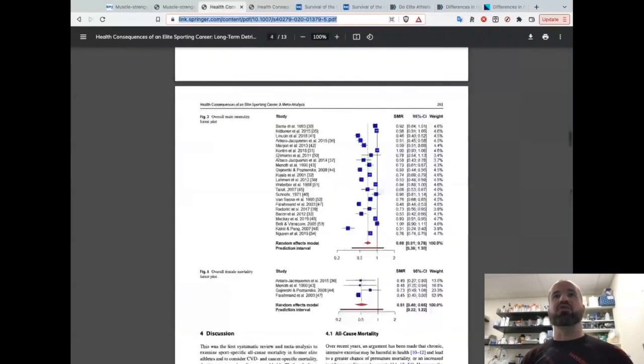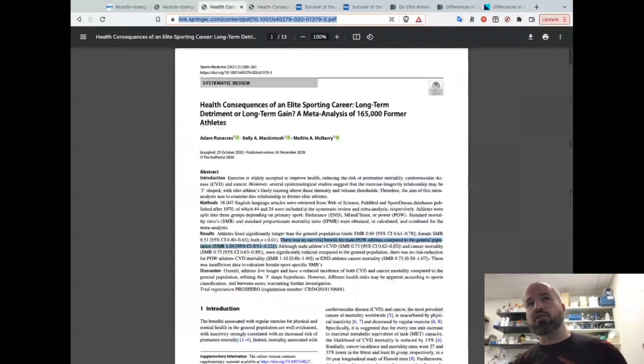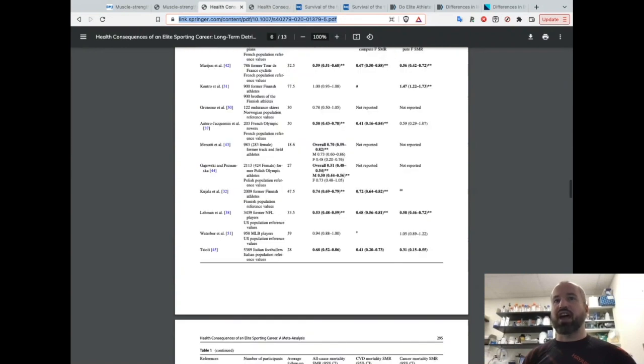Let's look at the rest of the evidence. Here's another study. This one is called Health Consequences of an Elite Sporting Career: Long-Term Detriment or Long-Term Gain, a Meta-Analysis of 165,000 Former Athletes by Adam Runikers et al. It says in the abstract there is no survival benefit for male power athletes compared to the general population, but there were for endurance athletes. The same thing we're seeing in that previous study. Power athletes are guys who are big, have a lot of muscle, are explosive, depend on strength - weightlifters, discus throwers, wrestlers.